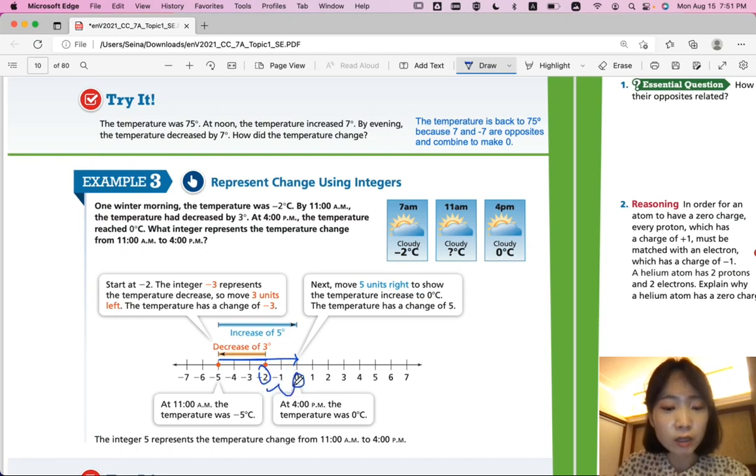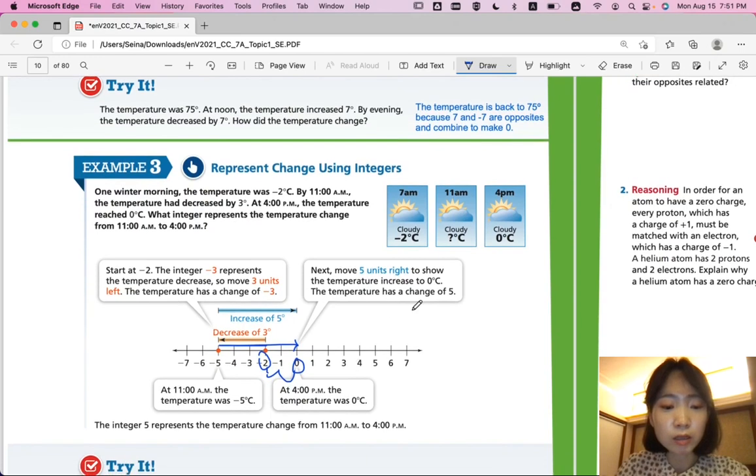It goes up 2. 2 degrees. Right? But what integer represents the temperature change from 11 a.m. to 4 p.m.? So the change we had is not just counting the final change. We're looking at the total change of temperature. So it decreased 3. And that is 3 degrees of change. And then it increased 5 degrees. So that's another 5 degrees worth of change. So you're going to add 3 plus 5.